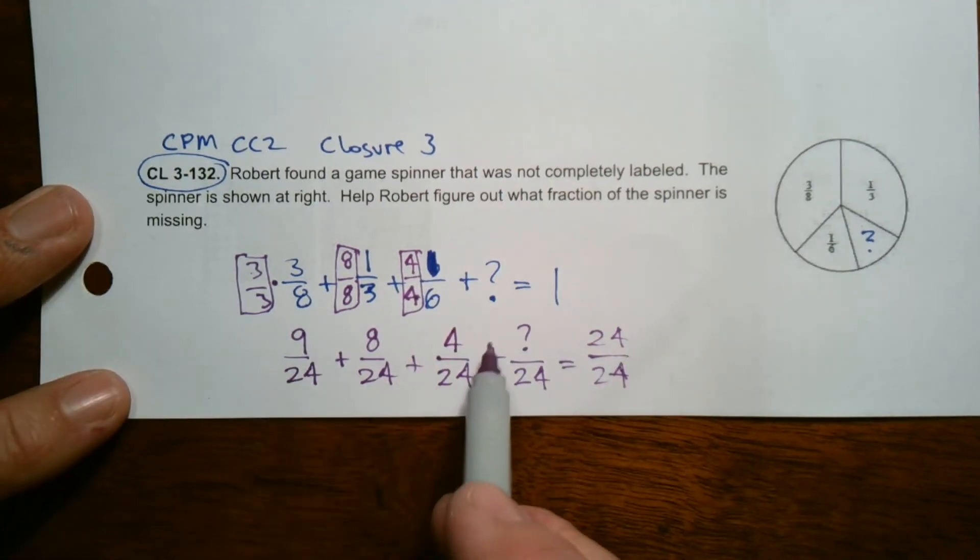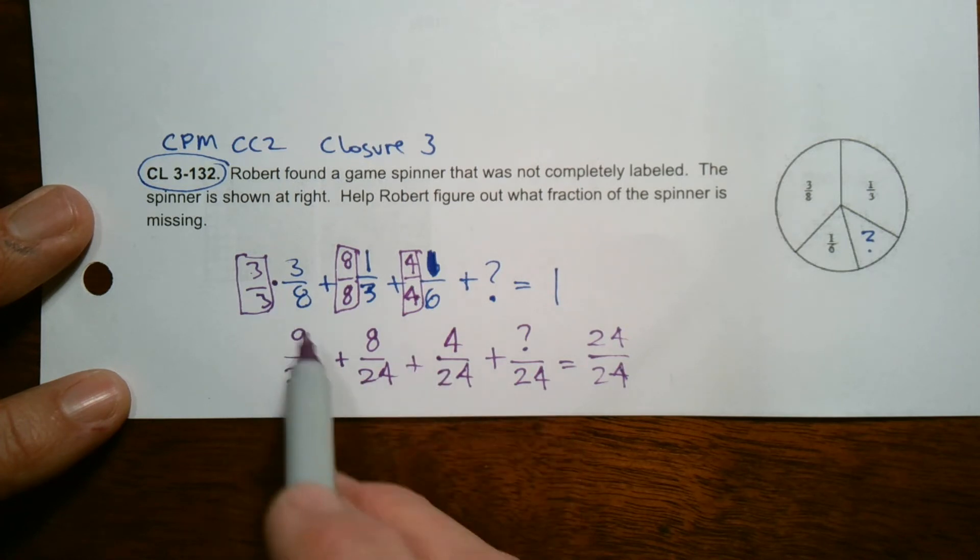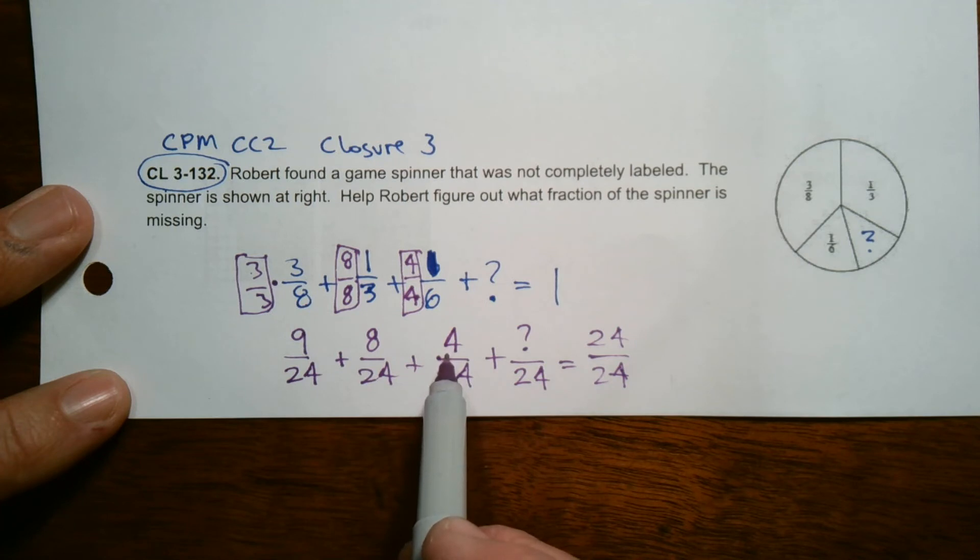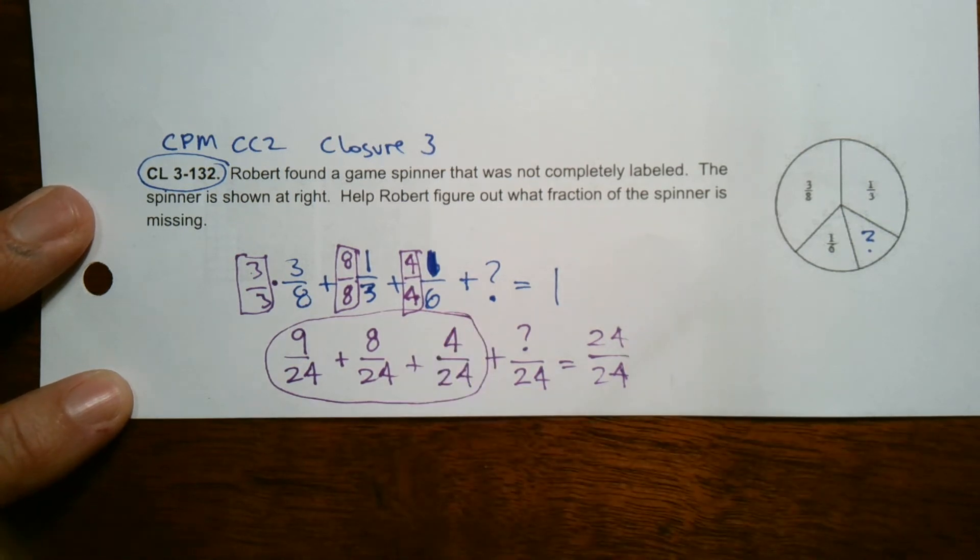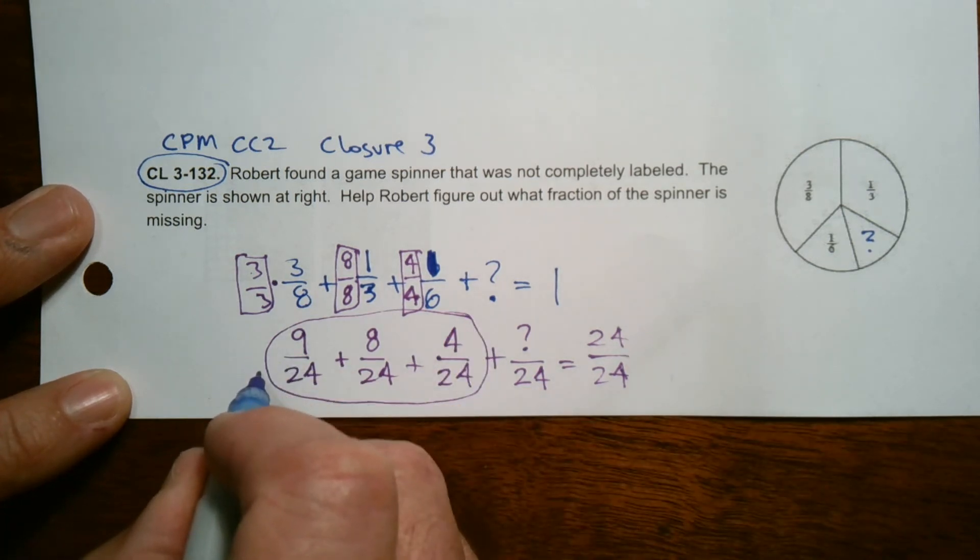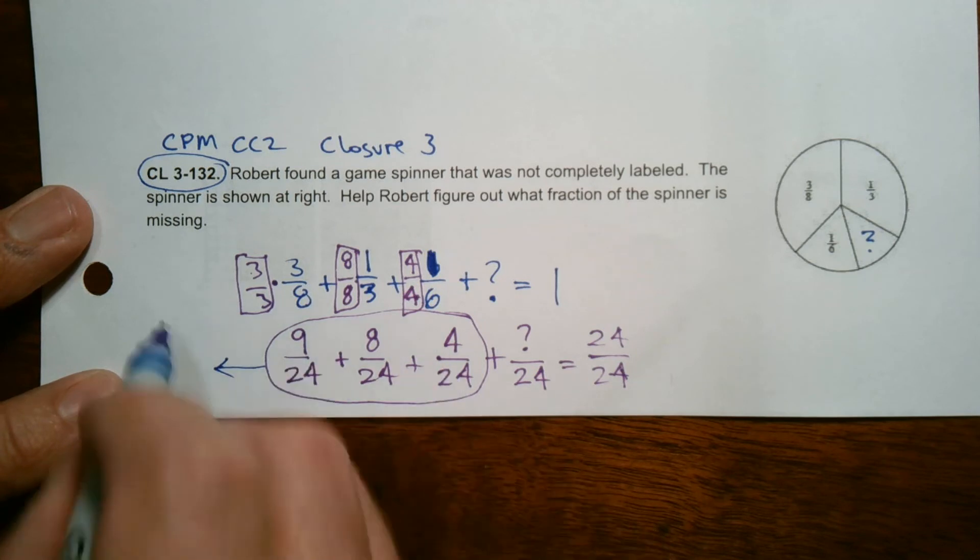So now I've got each of these in the same parts. So I can say 9 plus 8 plus 4. 9 plus 8 plus 4. Together, all of these, right? Together, all of those are going to equal, let's see, 9 and 8 is 17 plus 4 is 21. So together, that's 21 over 24.